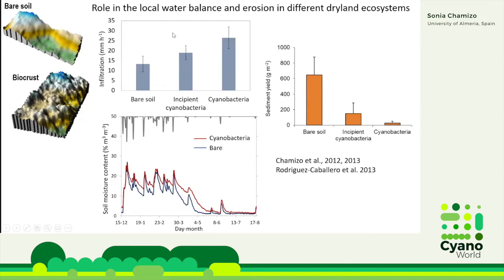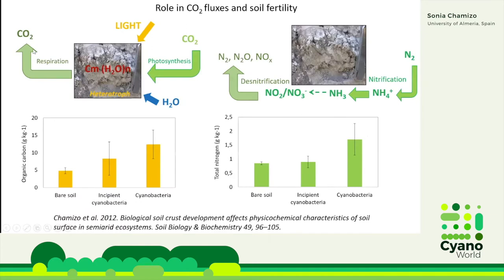We have also studied how biocrusts affect the carbon balance in drylands. We have measured CO2 fluxes in the crust — photosynthesis and respiration — because they are able to fix atmospheric carbon and also atmospheric nitrogen, releasing the fixed carbon and nitrogen into the surrounding soil, increasing the organic carbon content and the nitrogen content of the soils. This effect is more important as the biocrust is more developed.